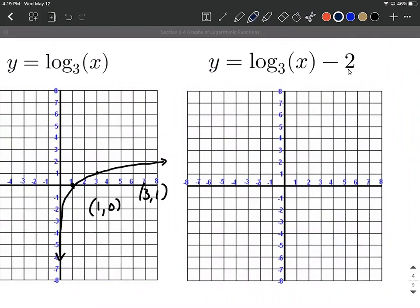So what that transformation is going to do is it's attached to the entire function. So that's going to be a vertical transformation. And vertical transformations tend to work how we think they should. That when we subtract 2, it's going to move everything down 2 units.